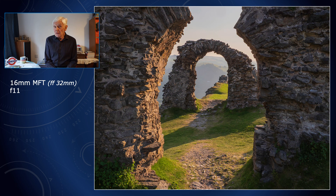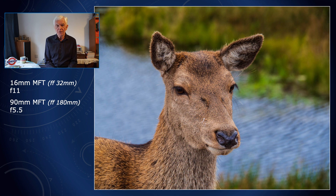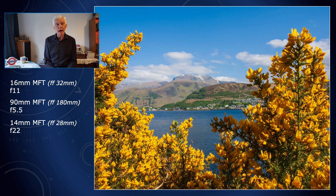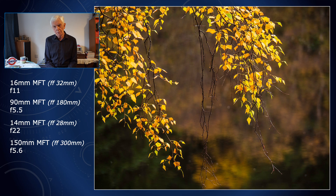Basically, a small aperture towards f22 increases depth of field, while a large aperture towards f2.8 reduces it. Furthermore, a wide-angle lens increases depth of field further, while a telephoto does the opposite. Add to this the sensor size — something we did not have to consider when shooting on 35mm film — and the numbers get rather complicated.